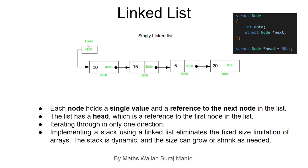We have a head element, which is a reference point to the entire linked list. If we want to display all elements up to the last one, the last element is a null pointer. We iterate using a while loop until we reach the null pointer to display all elements or change their values — for example, adding 5 to every value: 10 to 15, 15 to 20, 5 to 10, 20 to 25.